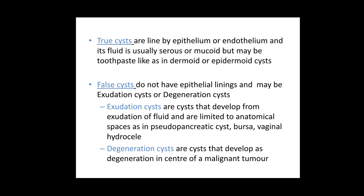The second variety is false cysts or pseudo-cysts. These are cysts which do not have epithelial linings. They can be further subclassified into exudation cysts, which develop from exudation of fluid limited to certain anatomical spaces — for example a pseudo-pancreatic cyst seen following acute pancreatitis — and degeneration cysts, which develop following degeneration at the centre of a malignant tumour.